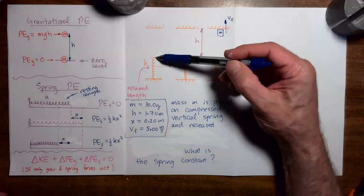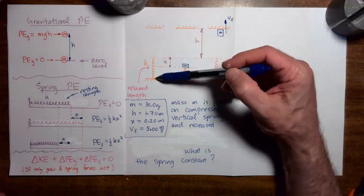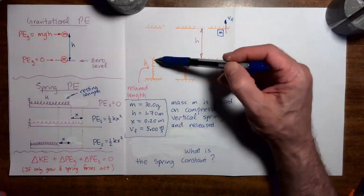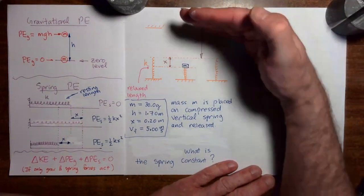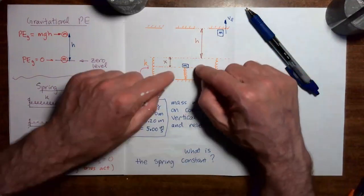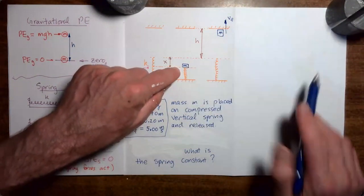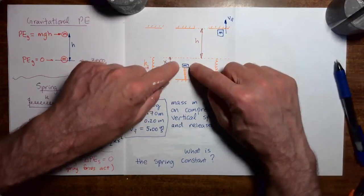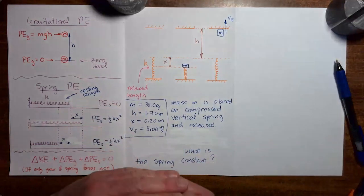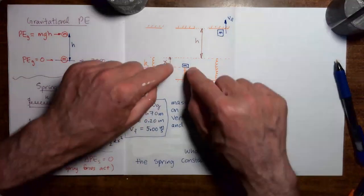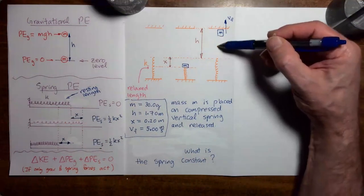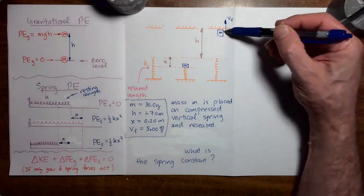In this figure, we have a vertical spring with one end attached to the floor, and in this figure the spring is at its relaxed length — it is not compressed or extended. Then we push down on the top of the spring, and with the spring compressed, we place a mass on top of it. We hold the mass there and then release the system. When we release the system, the spring extends back to its resting length and projects the mass upward.